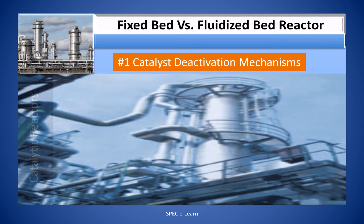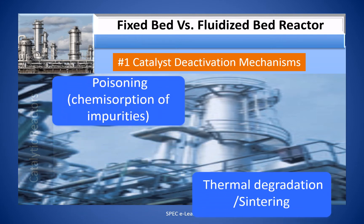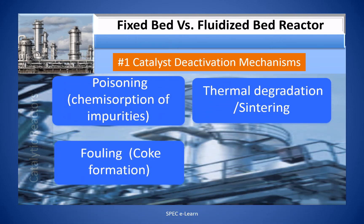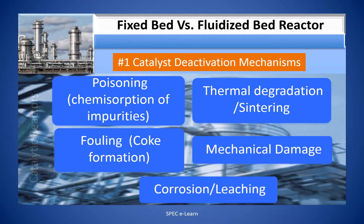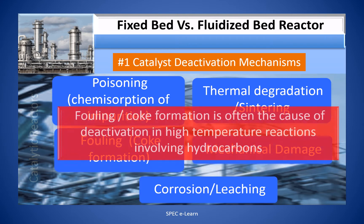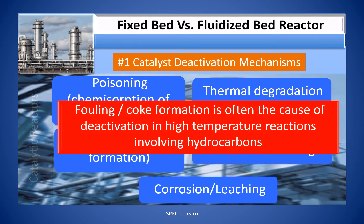In one of our previous videos, we discussed in detail the mechanisms of catalytic deactivation. Let us recall the main deactivation mechanisms: poisoning or chemisorption of impurities, thermal degradation or sintering, fouling or coke formation, mechanical damage, corrosion, and leaching. In rapidly deactivating catalysts, fouling or coke formation is often the cause of deactivation in high-temperature reactions involving hydrocarbons.